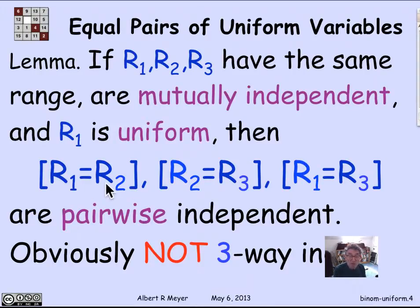Because if I know that R1 is equal to R2, and I know that R2 is equal to R3, it follows that R1 is equal to R3. So given these two, the probability of this changes dramatically to certainty. So this is the useful lemma, which is that if I have the three variables, and I look at the three possible pairs of values that might be equal, whether any two of them are equal is independent of each other.